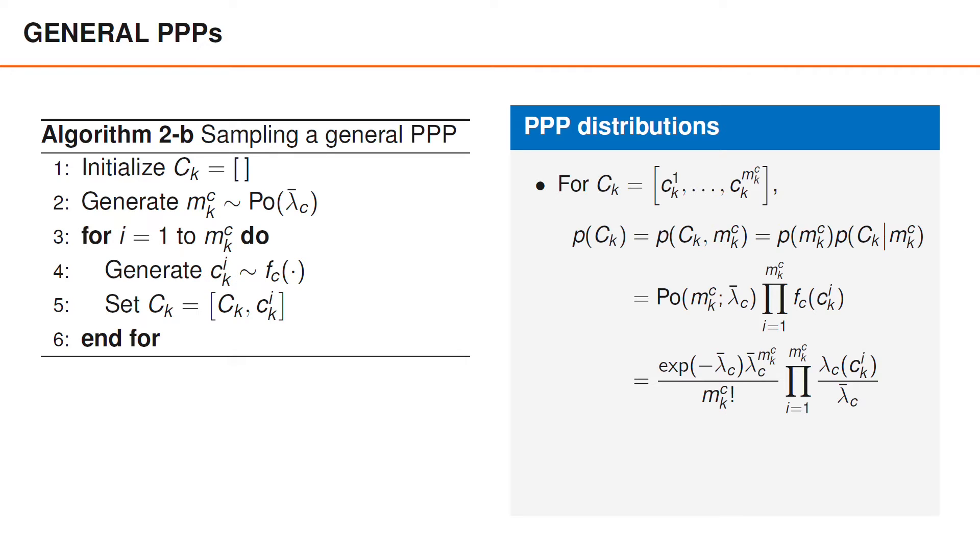To see this, we note that this Poisson distribution is e to the power of minus lambda bar c times lambda bar c to the power of mkc, all of this divided by mkc factorial, whereas the spatial distribution fc is lambda c over lambda bar c.